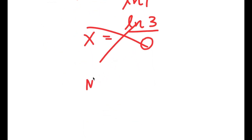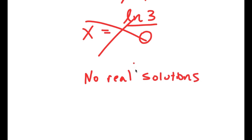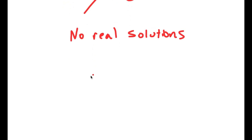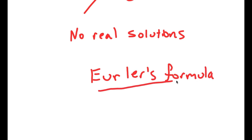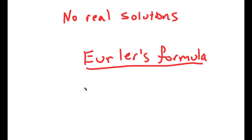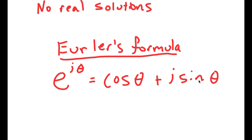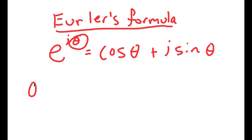However, this just means there are no real solutions — there are different types of solutions. To solve this equation, I'm going to use Euler's formula, which states that e to the power of i times theta equals cosine of theta plus i times sine of theta.